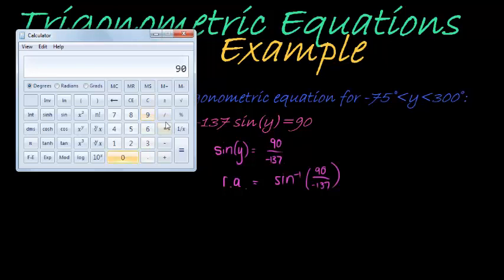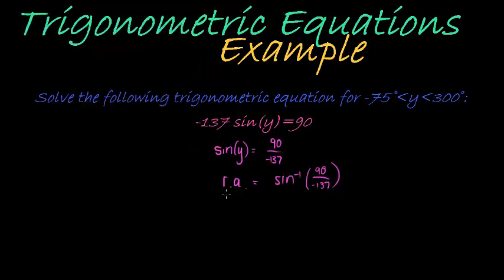90 divided by 137 is negative. Inverse of sine gives me negative 41.07. That is my reference angle.